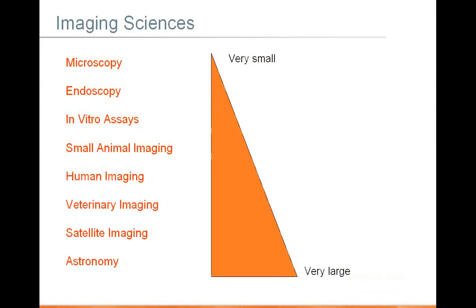Just to ground our discussion today, the imaging sciences are really unified in that you're always trying to find some interesting signal over a background, and then ascribe that signal to some interesting phenomenon, whether you're talking about microscopy, endoscopy, small animal imaging, human imaging, or astronomy.